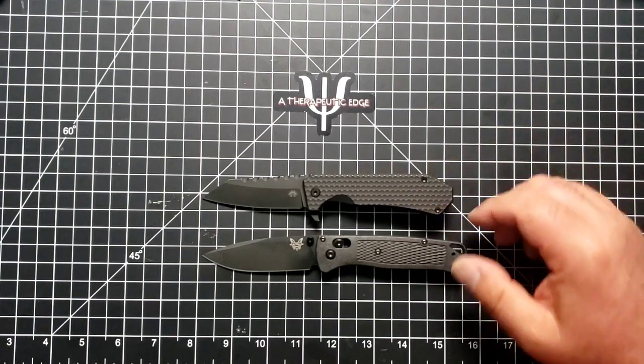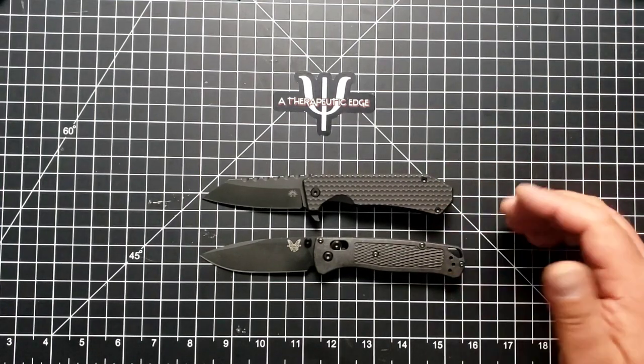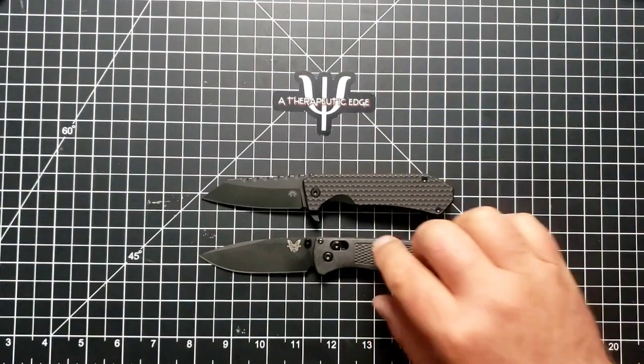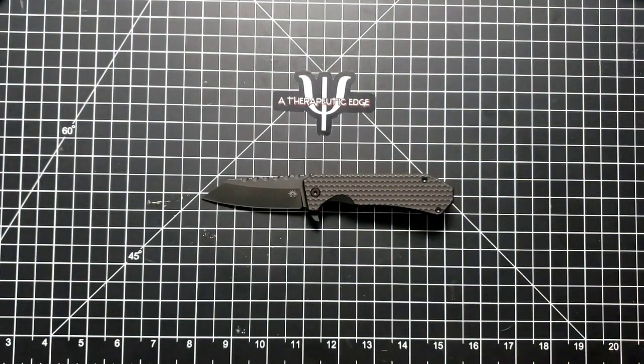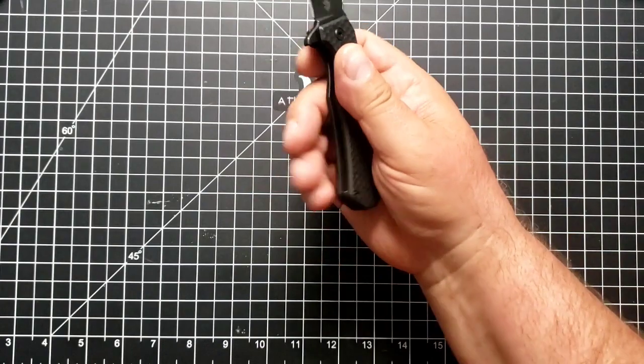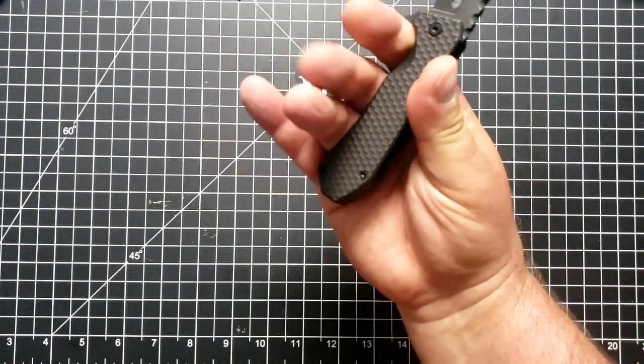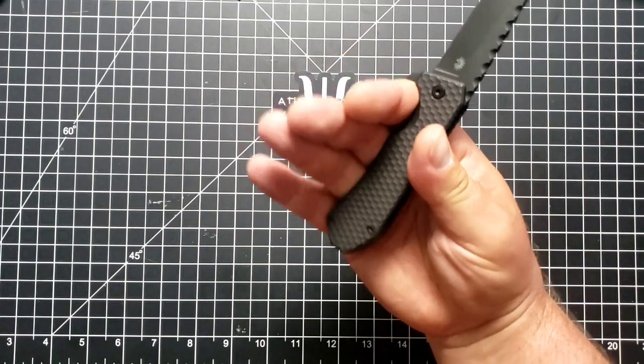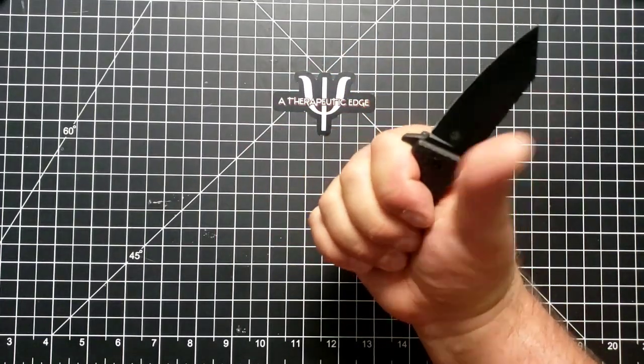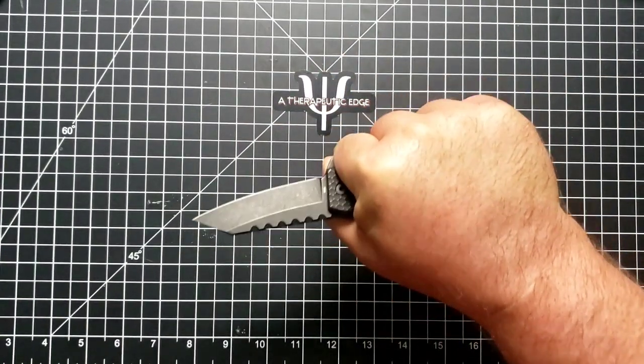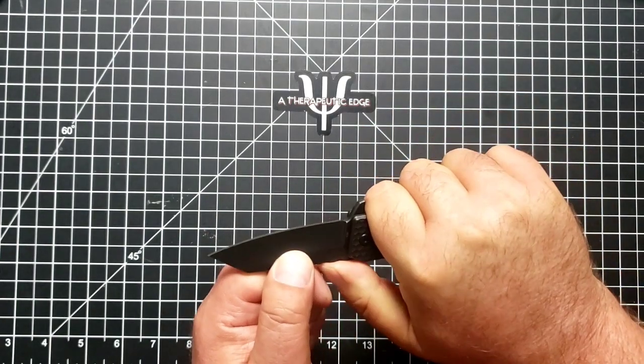Now, you don't get a lot more blade on the Bugout. But as I said, the Black Mamba is a very compact knife. And yet, while it is basically a three-finger knife for me, as you can see, there is room for the pinky back here. And when you have this knife in hand, it is incredibly locked in.